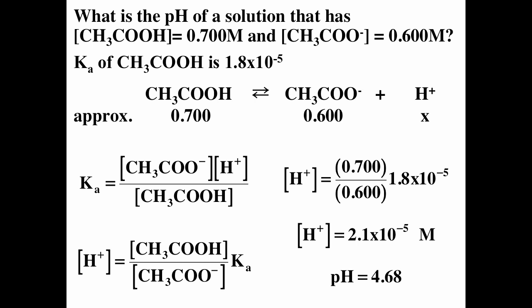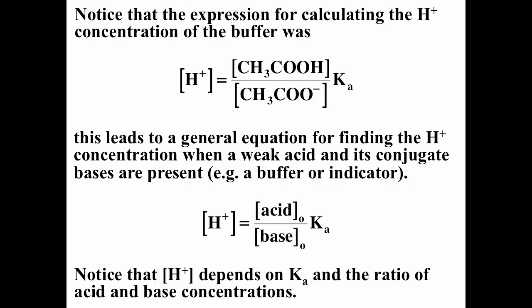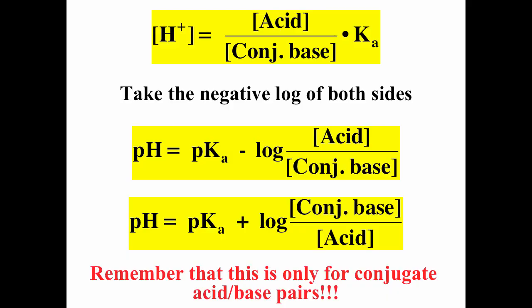So we had the hydrogen ion concentration equal to the initial concentration of the acid divided by the initial concentration of the base, times Ka. If we take the negative log of both sides and do a little algebra, we end up with: pH = pKa + log([base] / [acid]). The concentrations of the base and acid are the initial concentrations. You can only use the Henderson-Hasselbalch equation when you have a conjugate acid-base pair and when there is no strong acid or strong base involved.